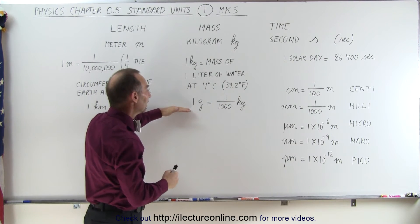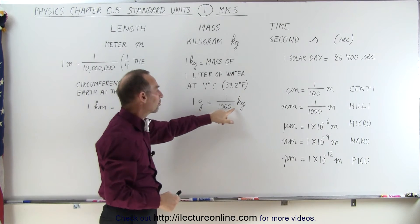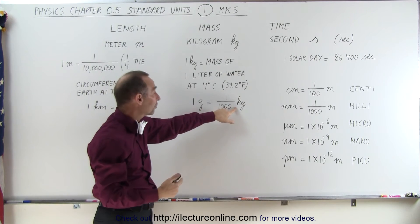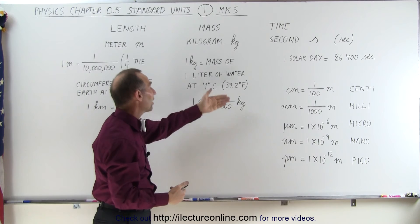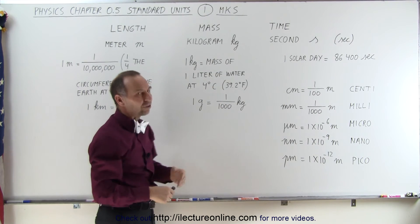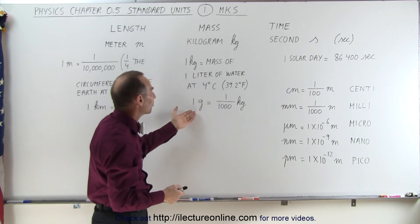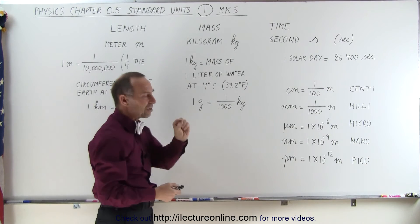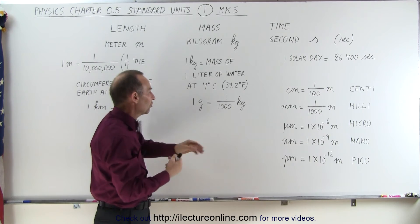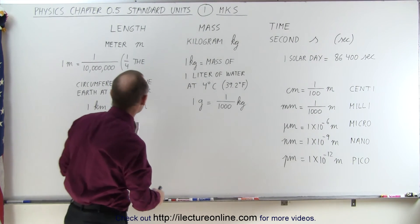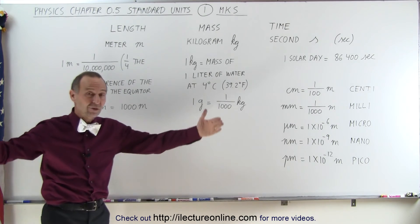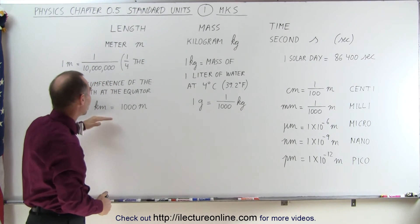One gram is one one thousandth of a kilogram. Remember, kilo stands for a thousand, so one gram is one one thousandth of a kilogram. It's actually surprising that we don't use gram as a standard unit of mass, but that's actually such a small amount that it makes more sense to make kilograms a standard unit, and meter, which is about this long, is a good measure for standard length.